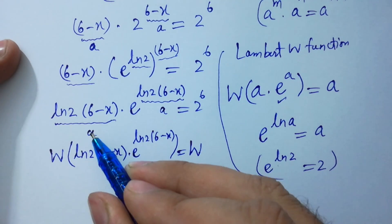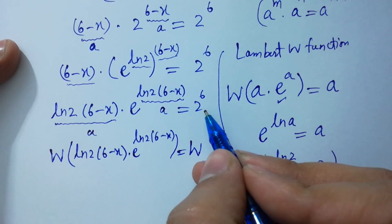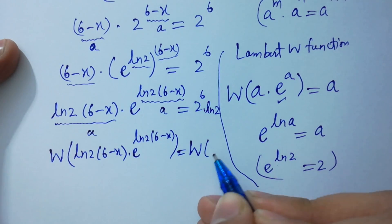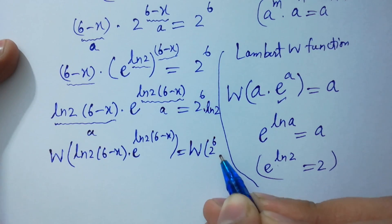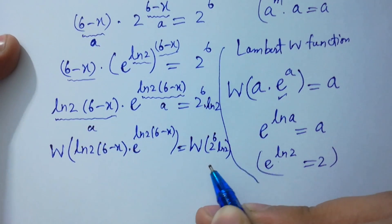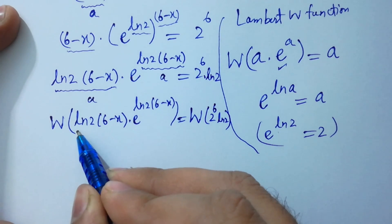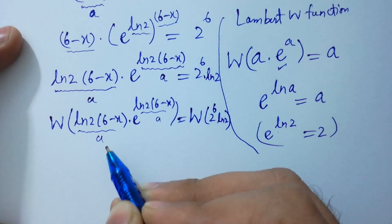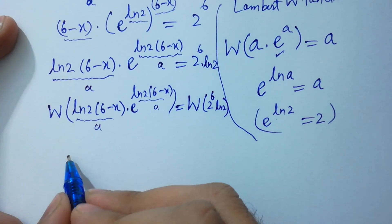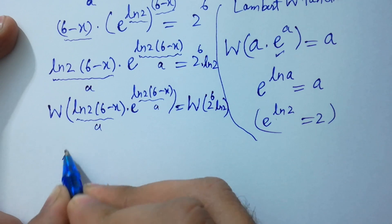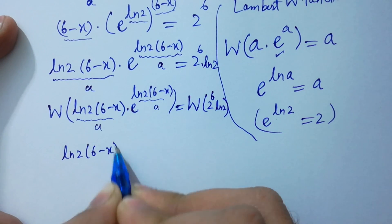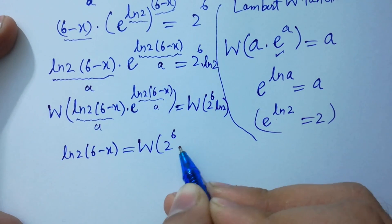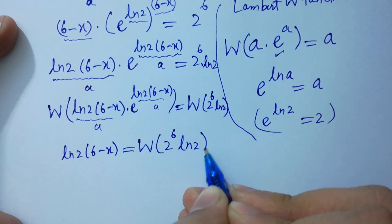Applying the Lambert W function: W of a times e to the power a equals a, which here is natural log 2 times 6 minus x, equals W of 2 to the power 6 times natural log 2, and that result stays as is.